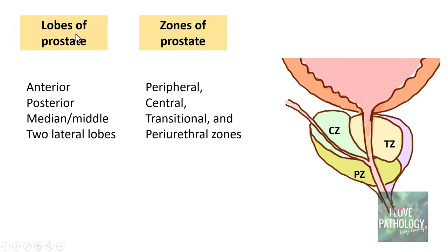Anatomically, you have 5 lobes of the prostate: anterior, posterior, median or middle lobe, and 2 lateral lobes — right lateral as well as left lateral lobes.